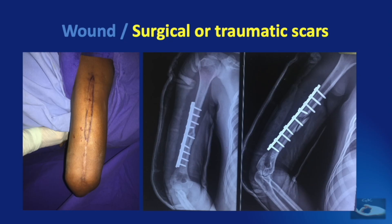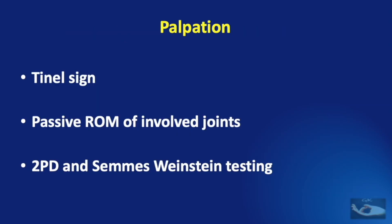In this clinical example, there is a telltale scar on the posterior aspect of the entire length of the arm, and the x-ray shows fixation of a fracture of the middle shaft of humerus with a plate and screws. In a case of radial nerve injury, the role of palpation covers three particular points: first, eliciting the Tinel's sign; second, eliciting the passive range of movement of the involved joints; and third, two-point discrimination and Semmes-Weinstein testing.